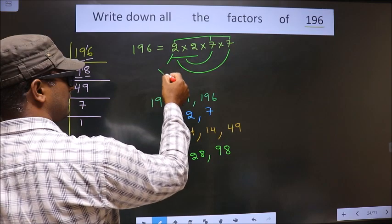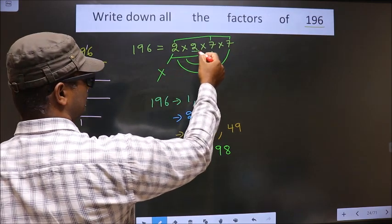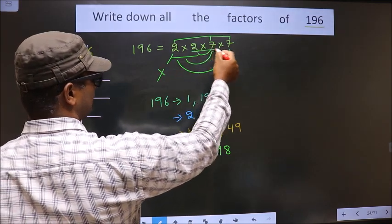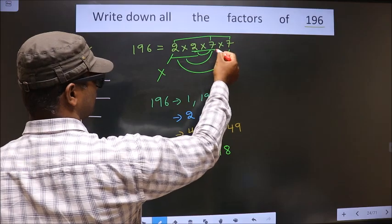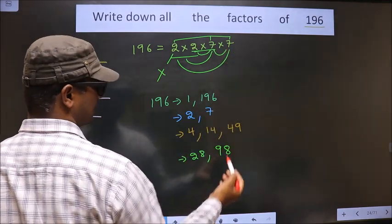Now you leave this 2, take this 2, combine with 7. 2 seven is 14. 14 into 7 is 98.